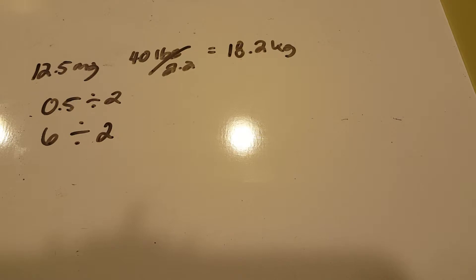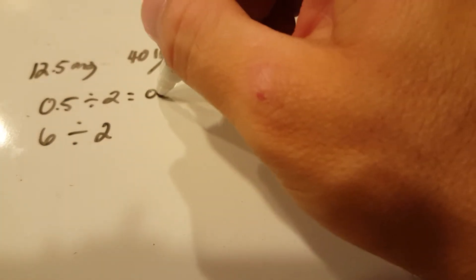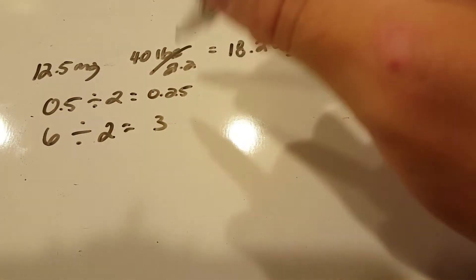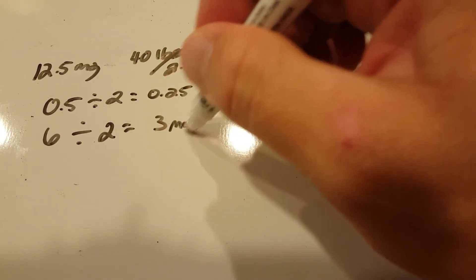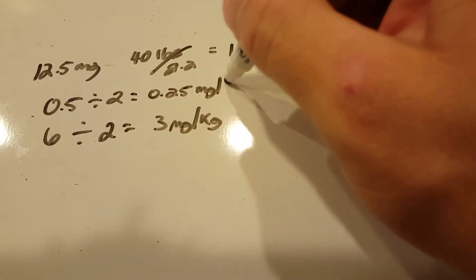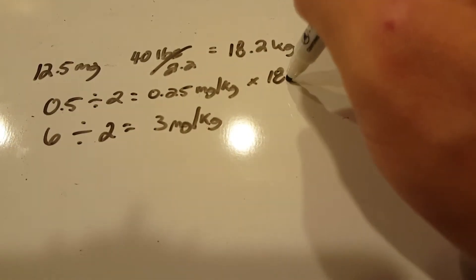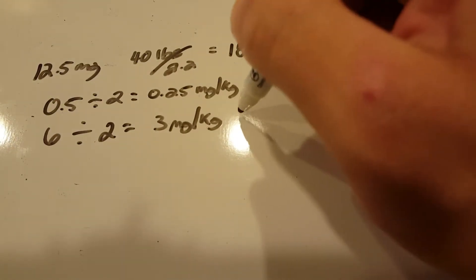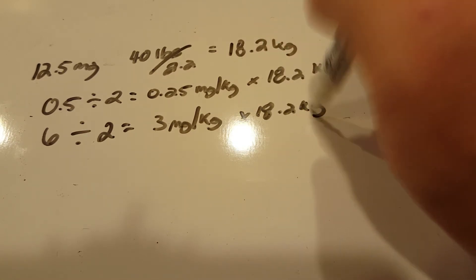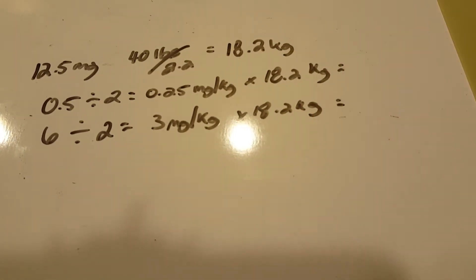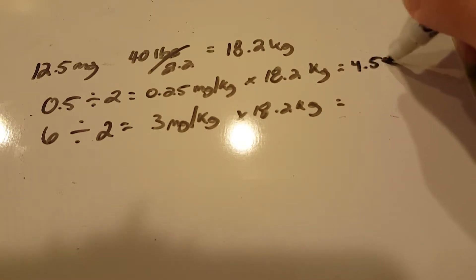That's per dose, and this is 3 milligrams per kilogram per dose. Then we can multiply by the 18.2, and we get 4.55 milligrams, and 3 times 18.2 is 54.6.